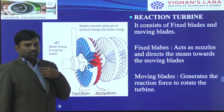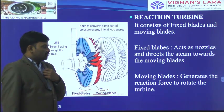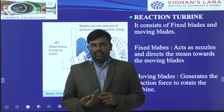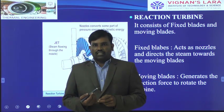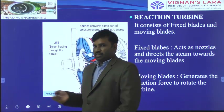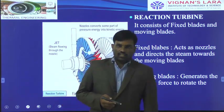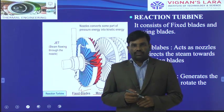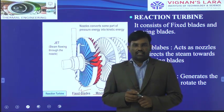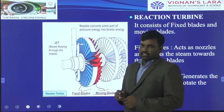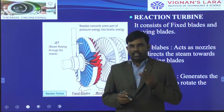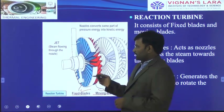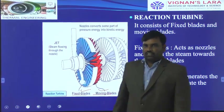In the next class we will see how much velocity is generated based on the inlet available pressure of steam. We will see derivations on the exit velocity of steam from the nozzle — at the throat section, at the diverging section, and at the converging section. If we use three different cross-sectional areas, we expect three different velocities at those three cross-sections. Thank you.